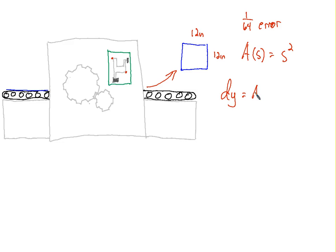To use differentials to approximate this, dy is equal to a prime of s times ds, the change in s. So dy equals, well, a prime equals 2s. What is s? Well, the target side length is 12. So we're going to start at 12, at a side length of 12, and have a ds of 1/64th of an inch to the right or to the left, positive or negative. So here we want a prime of 12 times ds. ds is actually either positive or negative 1/64th of an inch. So dy equals 2 times 12 is 24, a prime of 12 is 24 times plus or minus 1/64th.